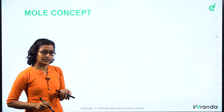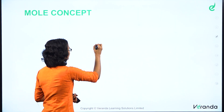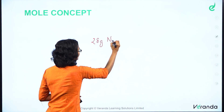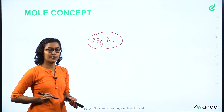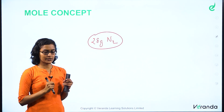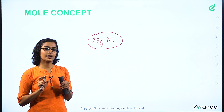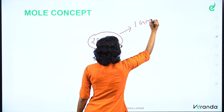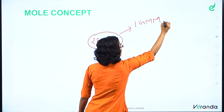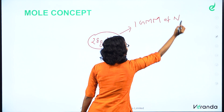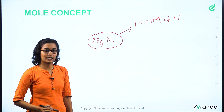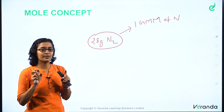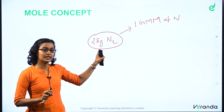So gram atomic mass is 1 mole of atoms, and gram molecular mass is 1 mole of molecules. Let's take a look at 28 grams of nitrogen. Now, what is the gram molecular mass of nitrogen? This is the gram molecular mass of nitrogen.